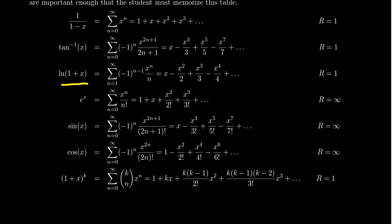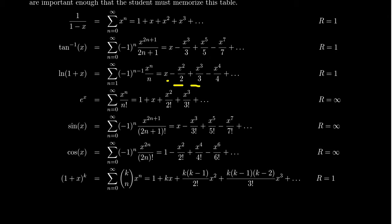Similarly, the natural log of 1 plus x, being the anti-derivative of 1 over 1 plus x, has a Maclaurin series: the sum from n equals 1 to infinity of negative 1 to the n minus 1 times x to the n over n. In expanded form: x minus x squared over 2 plus x cubed over 3 minus x to the 4th over 4. Very similar to arctangent, but natural log includes all powers while arctangent only has odd powers. Both have a radius of convergence of 1. We found all of these by manipulating the geometric series.